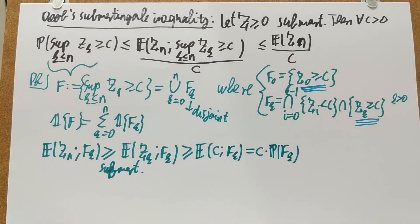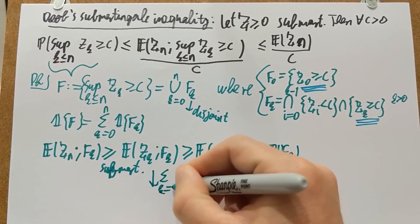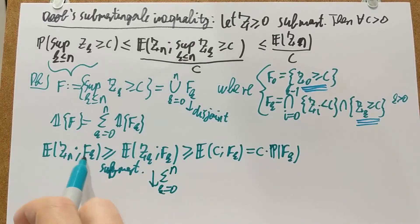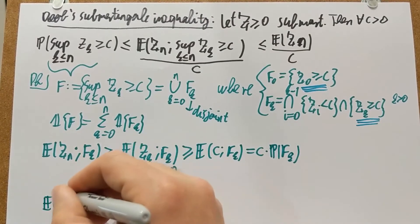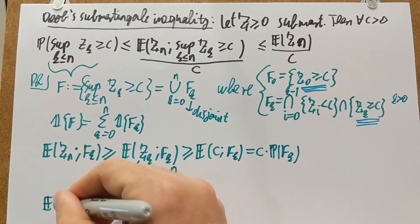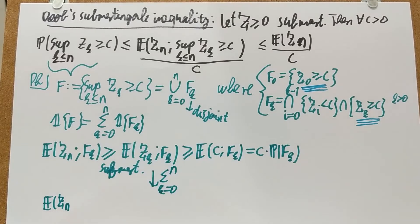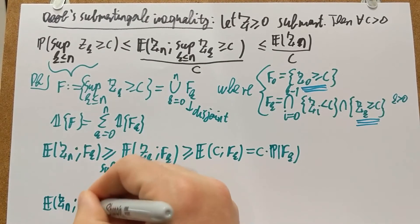All I need to do now is to sum these things up. So if I do on both sides a sum from 0 to N, then on the left-hand side, I can factor out the expectation of Z_N. And I'm left with the sum of the indicators of the F_K's, which is the indicator of F. So this becomes F after summing.